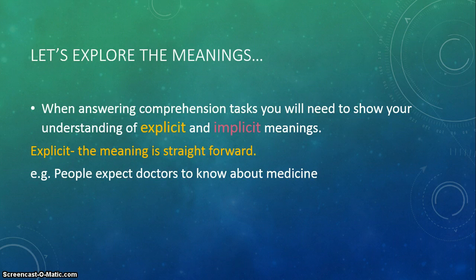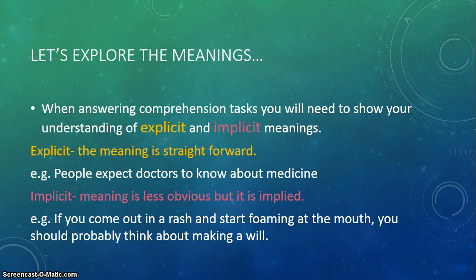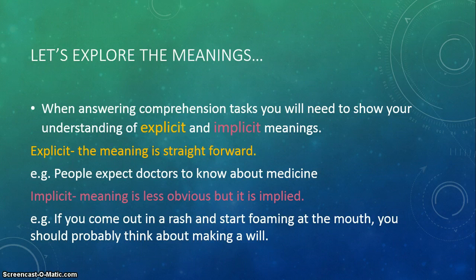Now the next meaning is implicit, and that means it's less obvious, but something is implied in that sentence. For example, the sentence says: if you come out in a rash and start foaming at the mouth, you should probably think about making a will. Obviously the meaning is implied and less obvious, but we can still understand that the sentence really means that if you start foaming at the mouth and get a rash, you need to start preparing perhaps for death, because you're going to make a will and divide up your belongings. It doesn't say you're going to die, but it is implied that things aren't as good as they seem.